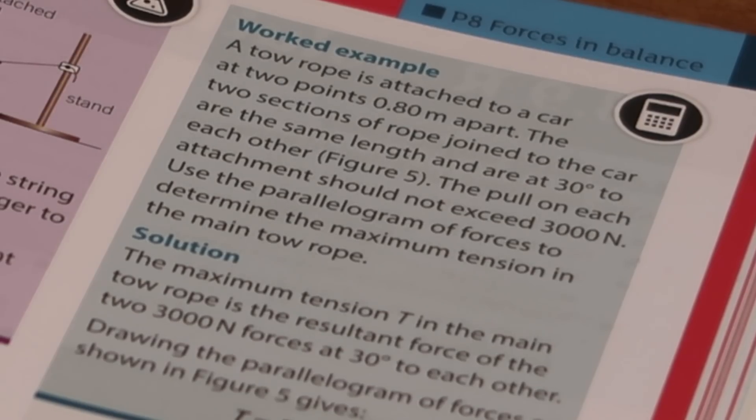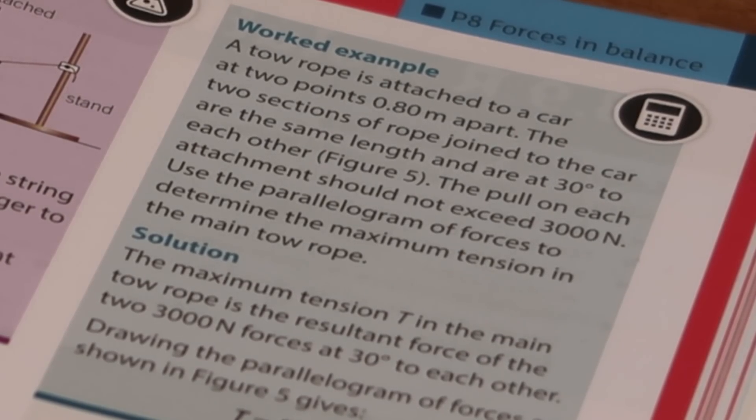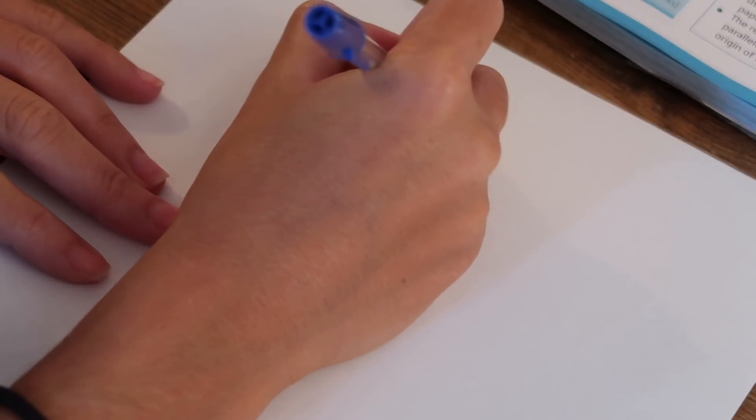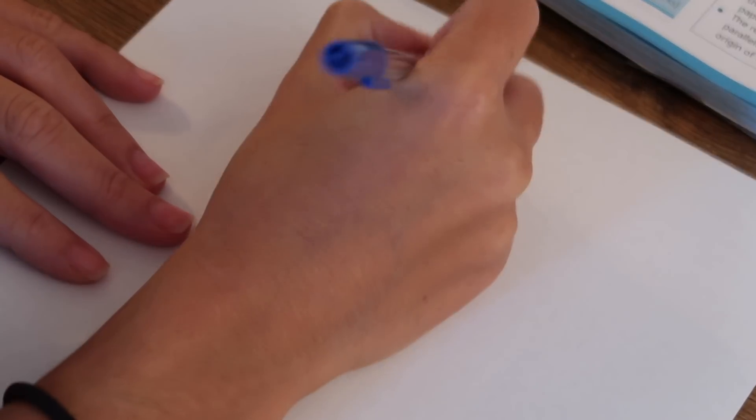It's a slightly more tricky question, and it's simply because of the way they've written it rather than the actual maths. A tow rope is attached to a car at 2 points 0.8 meters apart. The two sections of rope joined to the car are the same length and are at 30 degrees to each other. The pull on each attachment should not exceed 3,000 newtons. Use the parallelogram of forces to determine the maximum tension in the main tow rope. The way you want to start with this is by giving yourself a rough sketch of what's going on. So I do apologize, I can't draw. So there's the end of my car with the light.